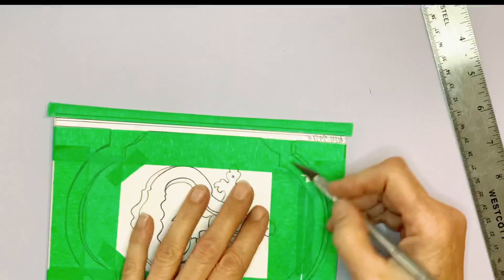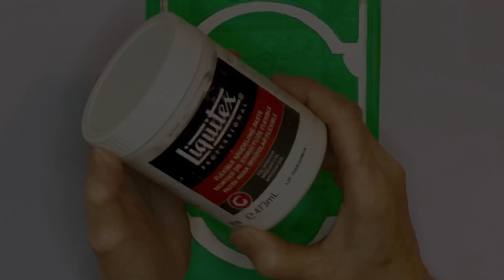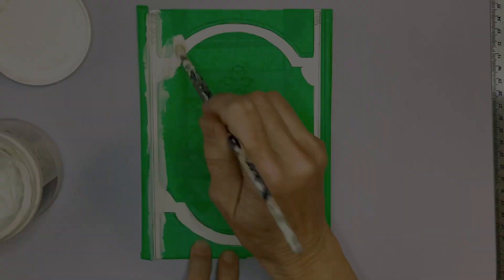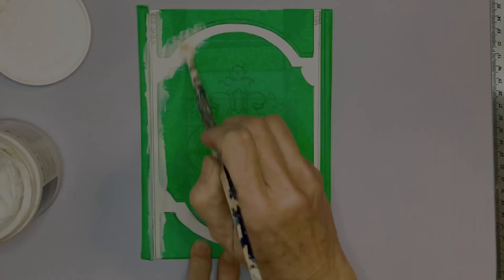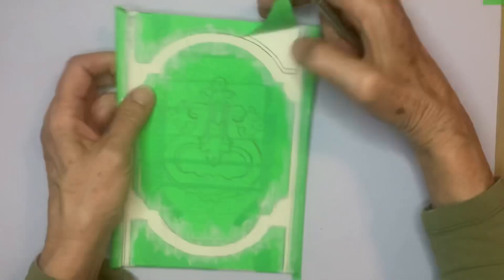The drawing allows for the application of mediums, in this case modeling paste which adds texture to the plate. Applying modeling paste with a coarse brush leaves texture behind that will catch the ink when the plate is printed.